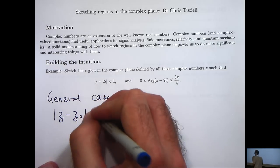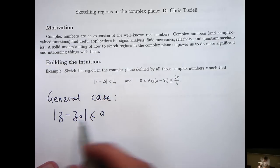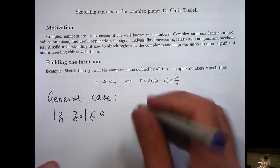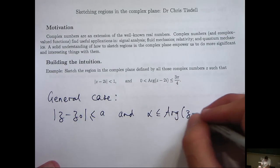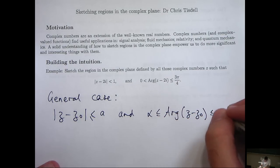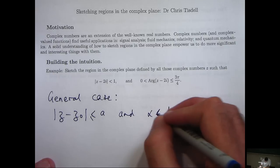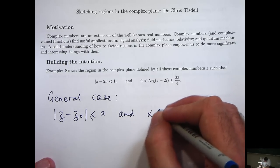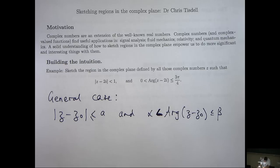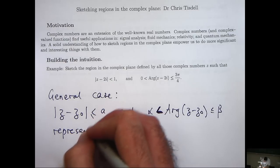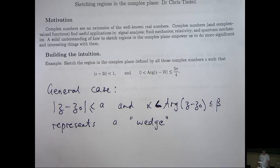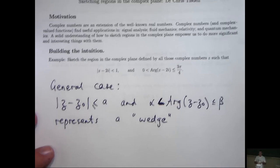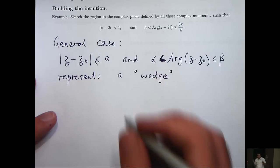So suppose z0 is a complex number, a is a positive real number and alpha and beta, I guess I really should have a less than or equal, less than here. And alpha and beta are real numbers that are between minus pi and pi. Well, this will represent a wedge in the complex plane. Now I'm using the term wedge very loosely there. Let me give you a picture and you'll see what I mean.